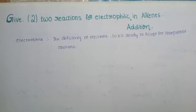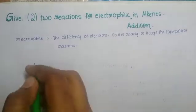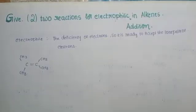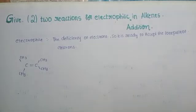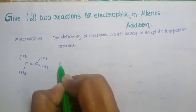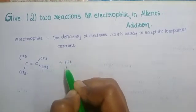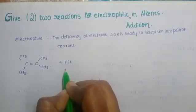Now we should understand how to write the electrophilic addition reactions of alkenes. The tetra-substituted carbon is more stable than the tri-substituted, disubstituted, and mono-substituted carbon. We are starting with a tetra-substituted carbon which has a double bond, meaning it is unsaturated. We are using hydrogen halide, specifically HCl.